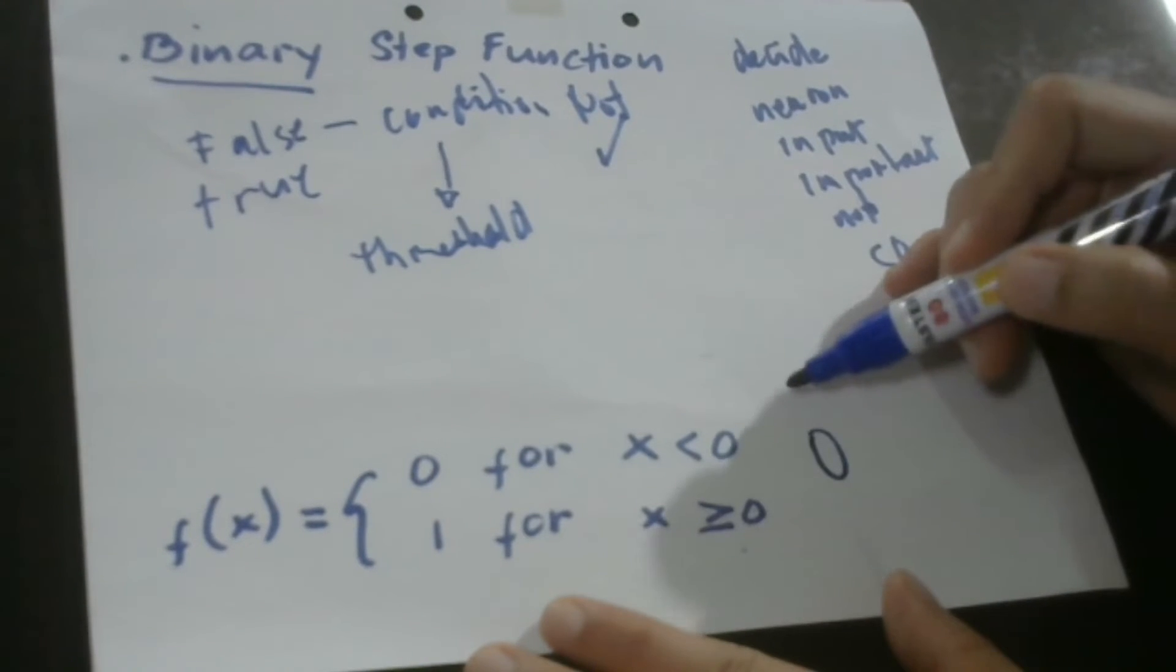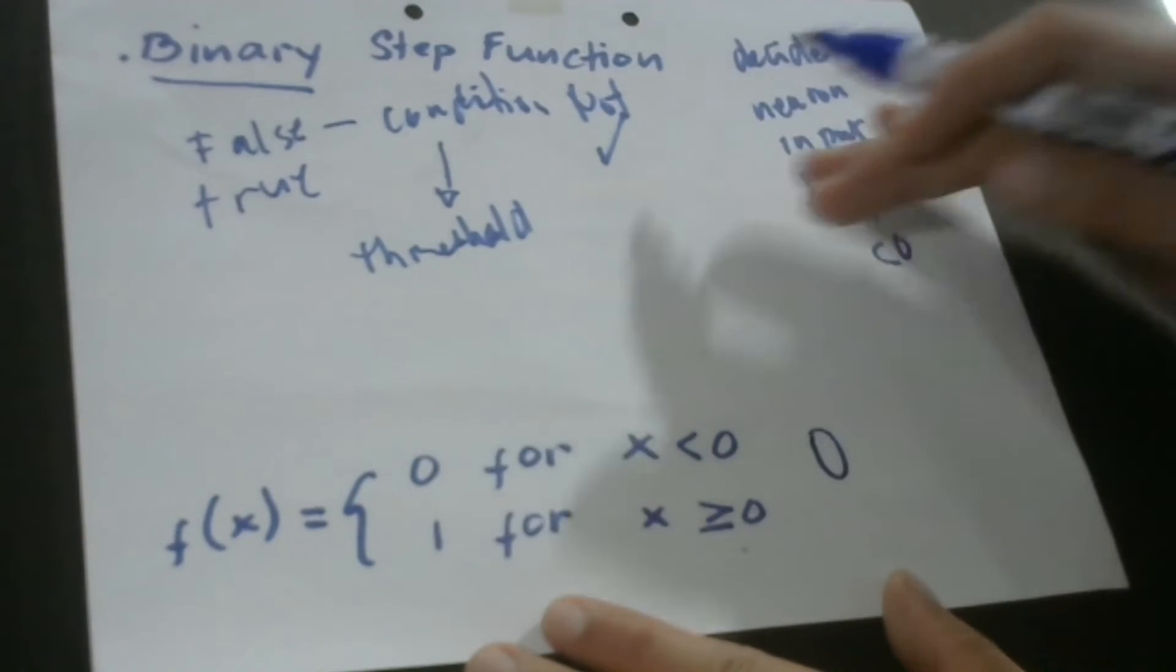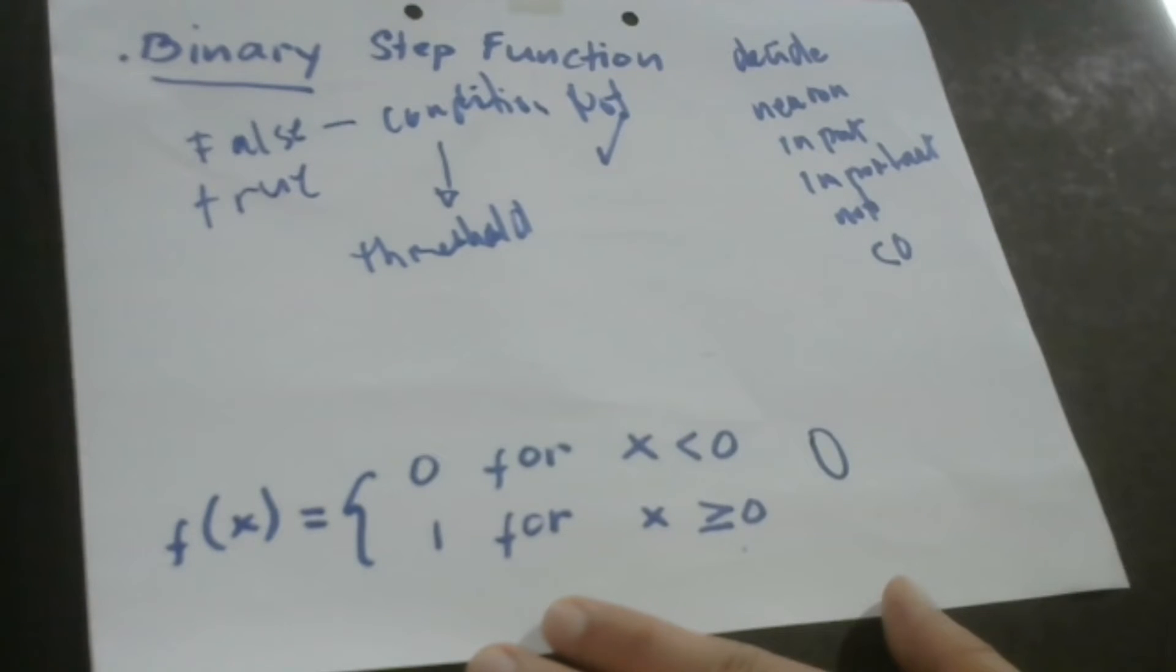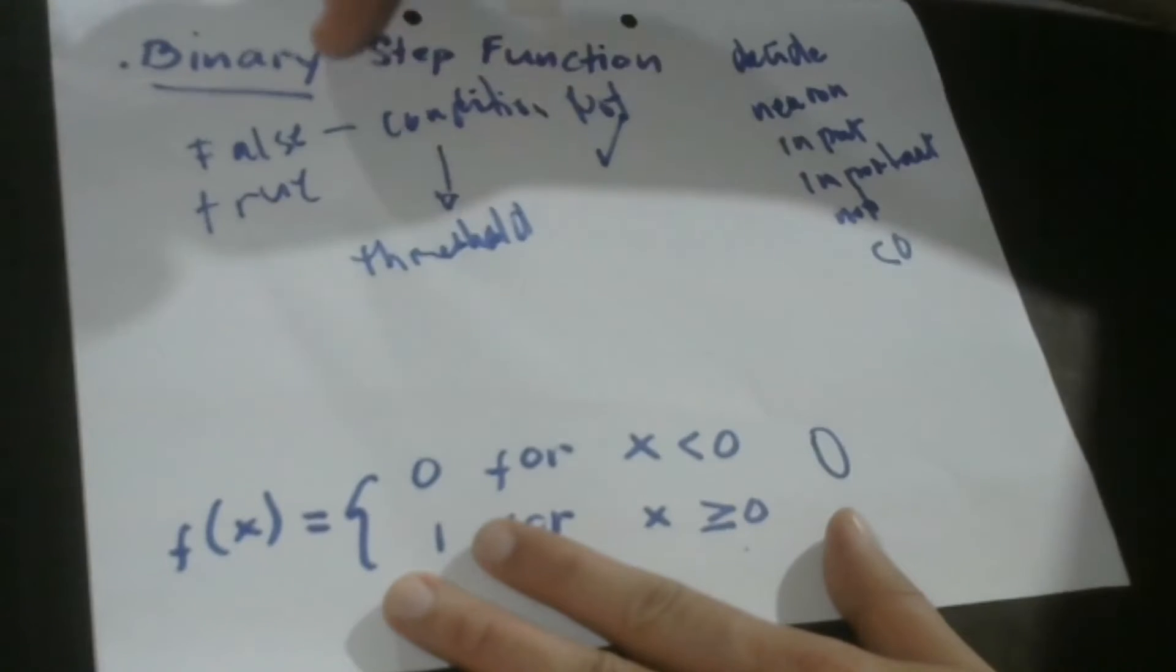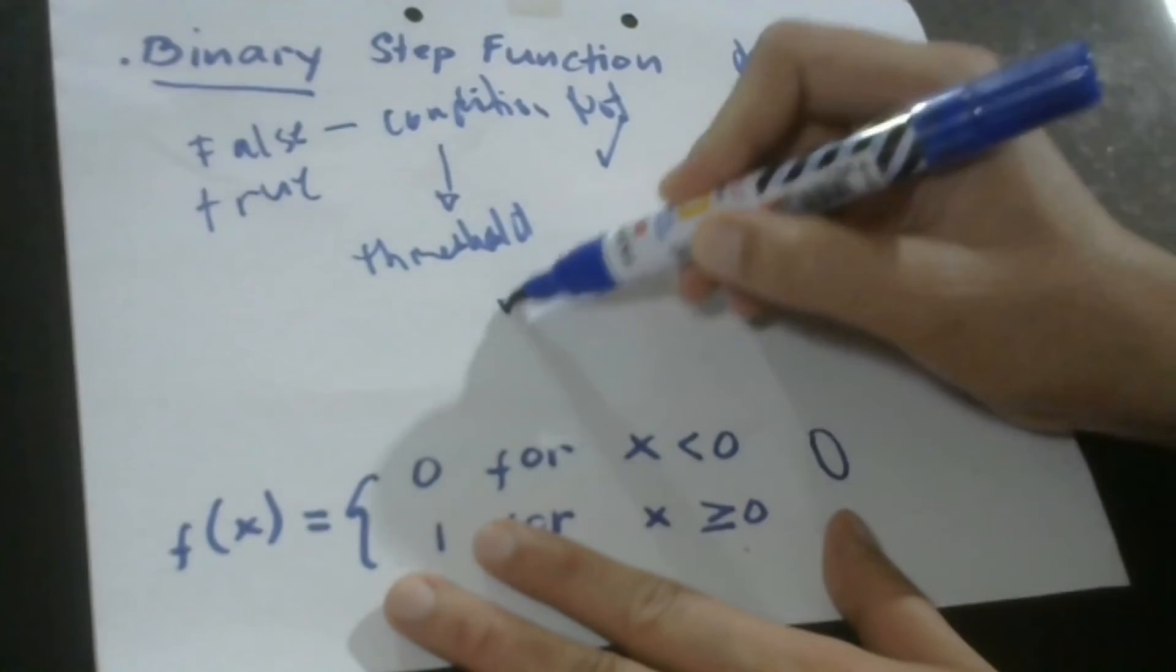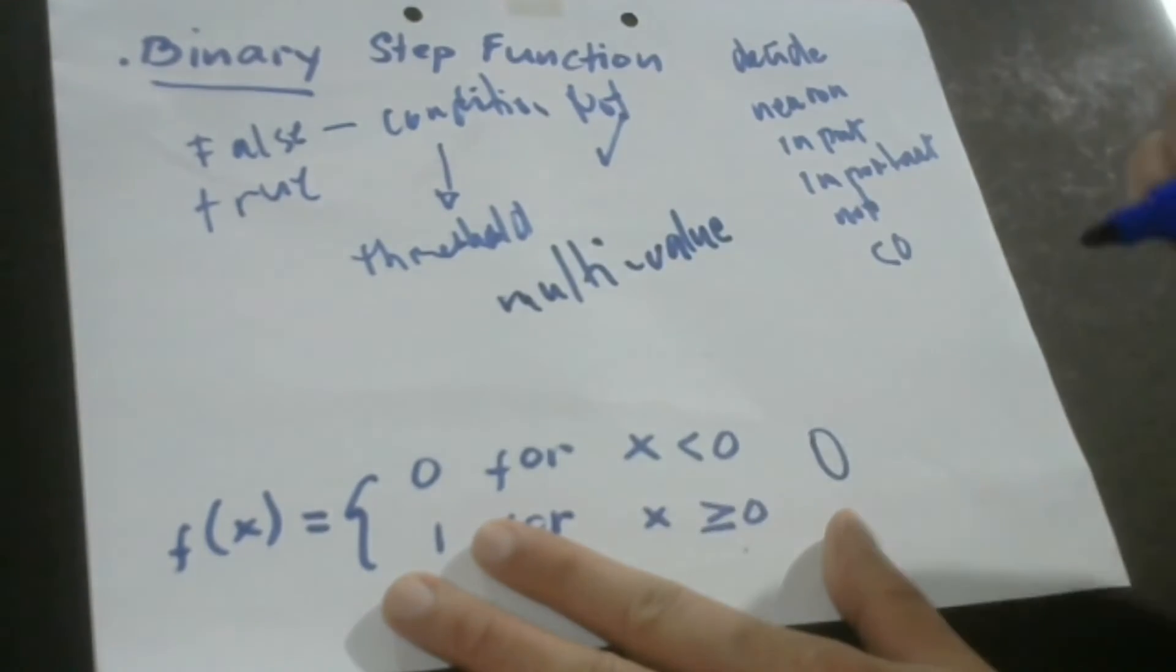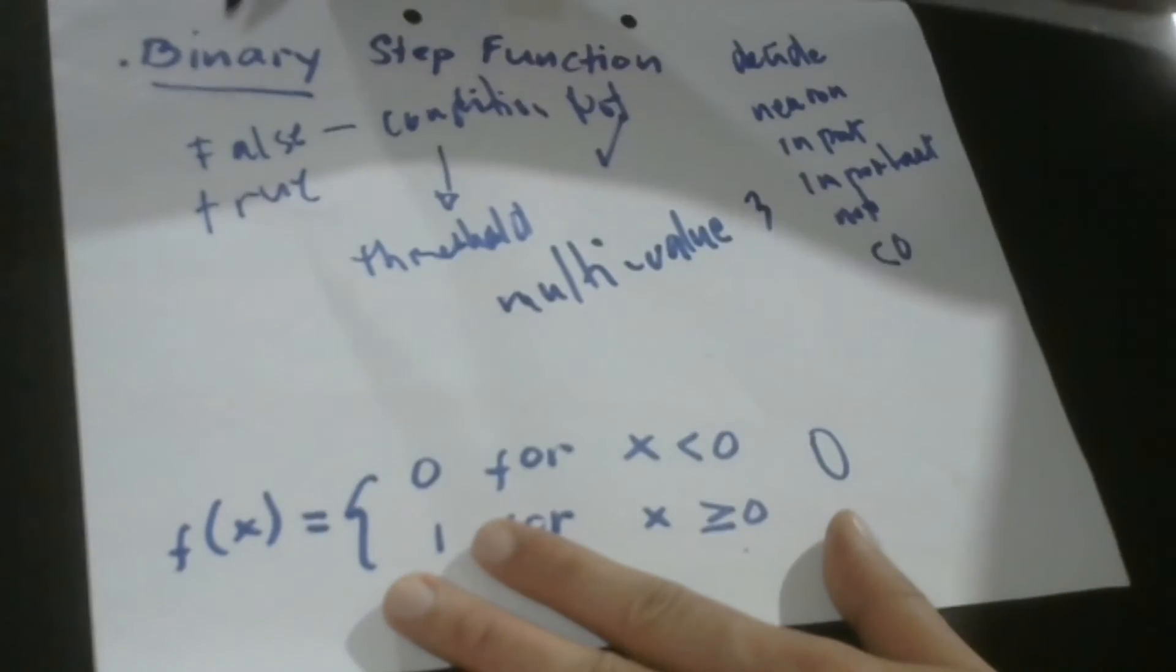But the story of binary step function is not paved with roses because it also has its own limitations. And what are these limitations? Since we only have binary values in this case, it means we can never provide multi-value outputs. Multi-value outputs means at least three. Again, it's because we only have binary values to consider.